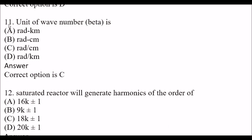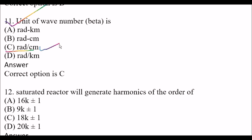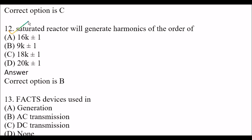Next question: Unit of wave number beta is — Option A: Radians per Kilometer. Option B: Radians per Semi. Option C: Radians per Semi. Option D: Radians per Kilometer. The right answer is Option C, Radians per Semi. Next question: A saturated reactor will generate harmonics of the order of — Option B: 9K ± 1 — is the right answer, where K represents the integer value.